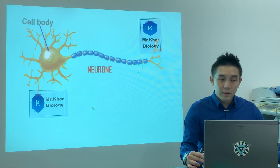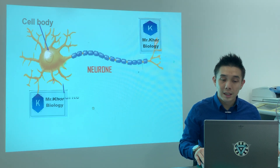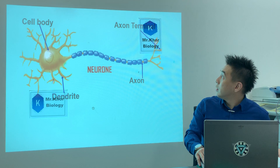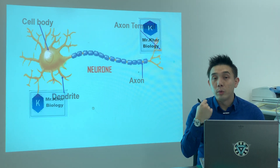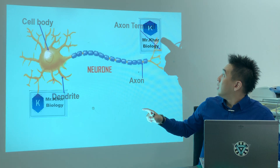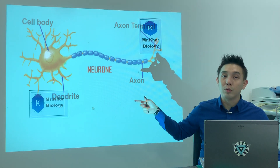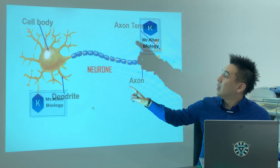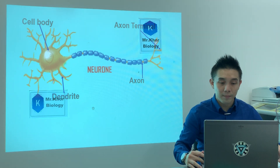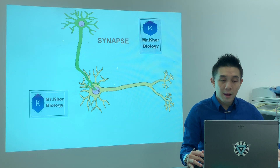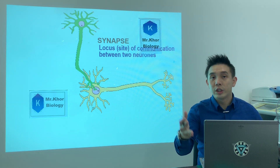Let's go through the structures of a neuron very quickly. This is called the cell body, this is called the dendrite, axon, and axon terminal. The reason for going through this is because synapse involves the junction whereby one neuron joins to another neuron. So just get to know axon, axon terminal, and dendrite.